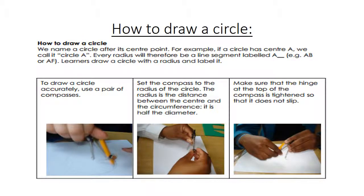How to draw a circle. We name a circle after its center point. For example, if a circle has center A, we call it circle A. Every radius will therefore be a line segment labeled A, for example AB or AF. Learners, draw a circle with a radius and label it.